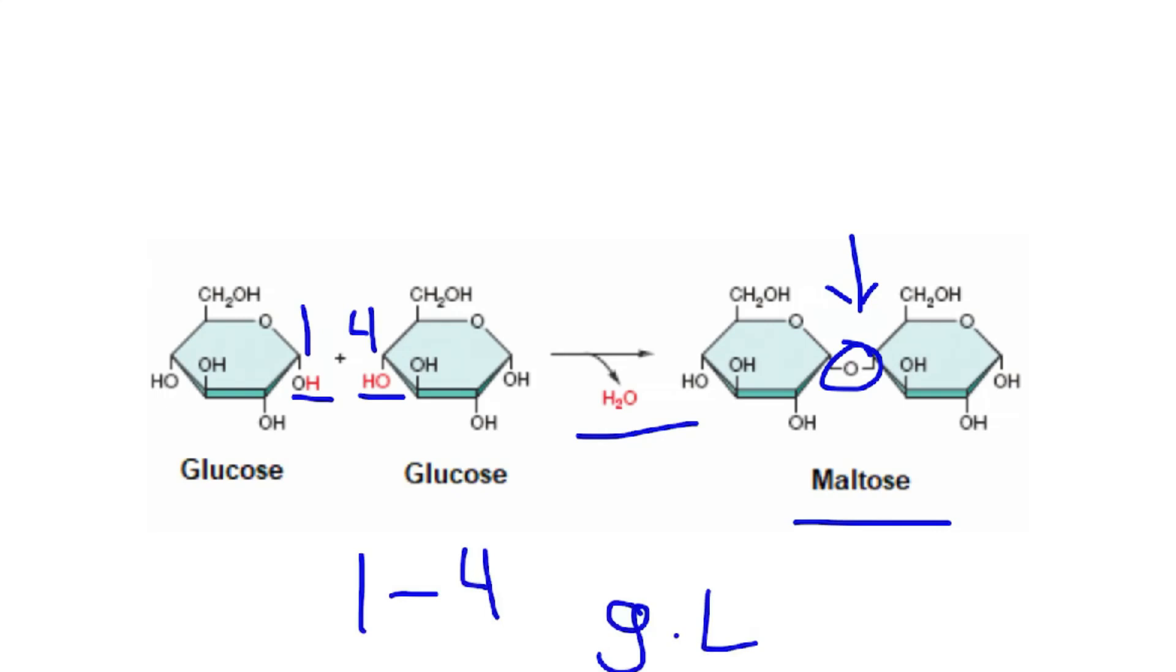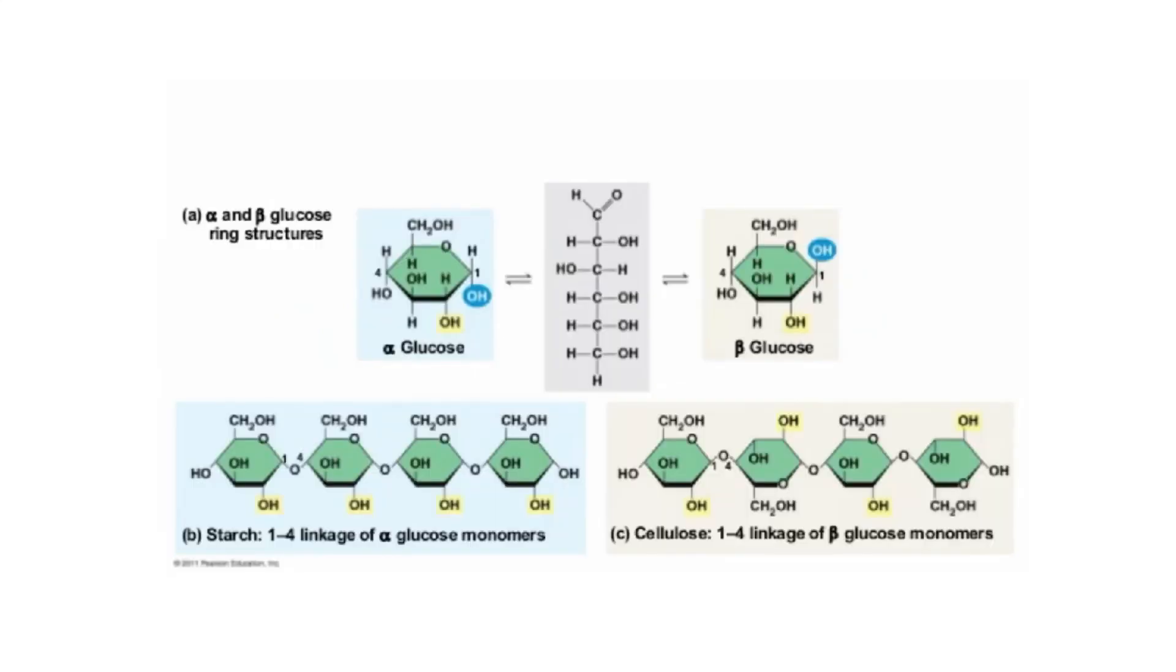By building monomers like this, small monosaccharide carbohydrates become larger disaccharides, which is two saccharides, or polysaccharides, many saccharides. Here, two glucose monomers make maltose, a disaccharide. It's important to note structure is very important in organic chemistry.